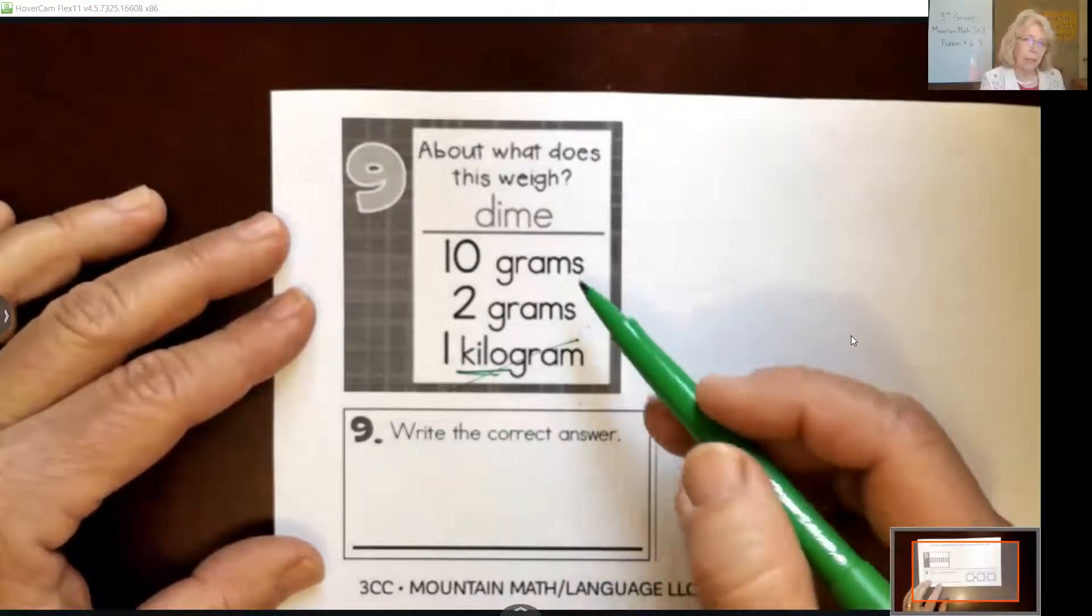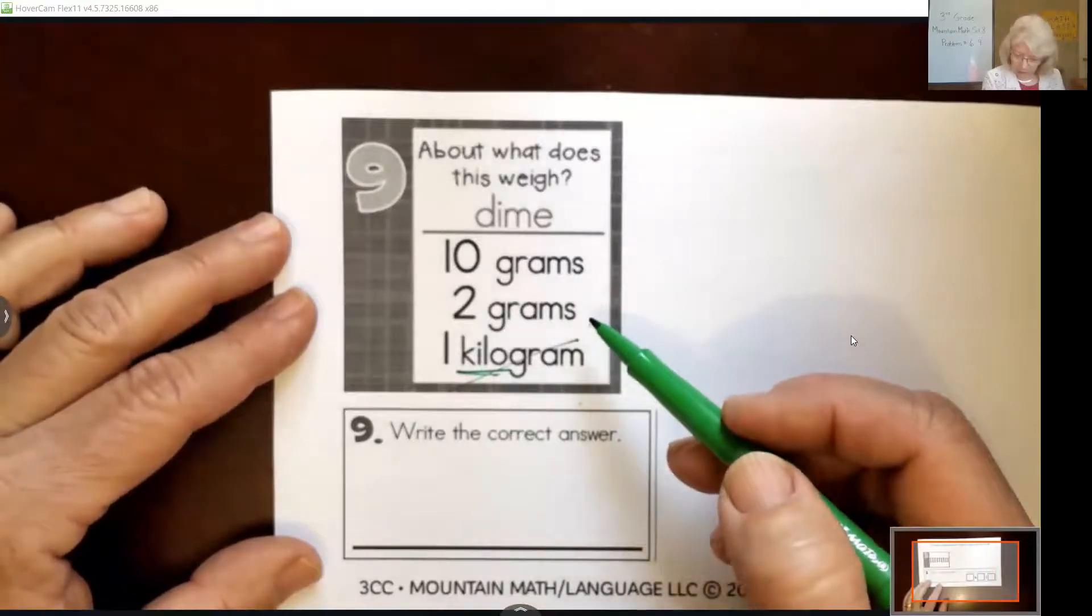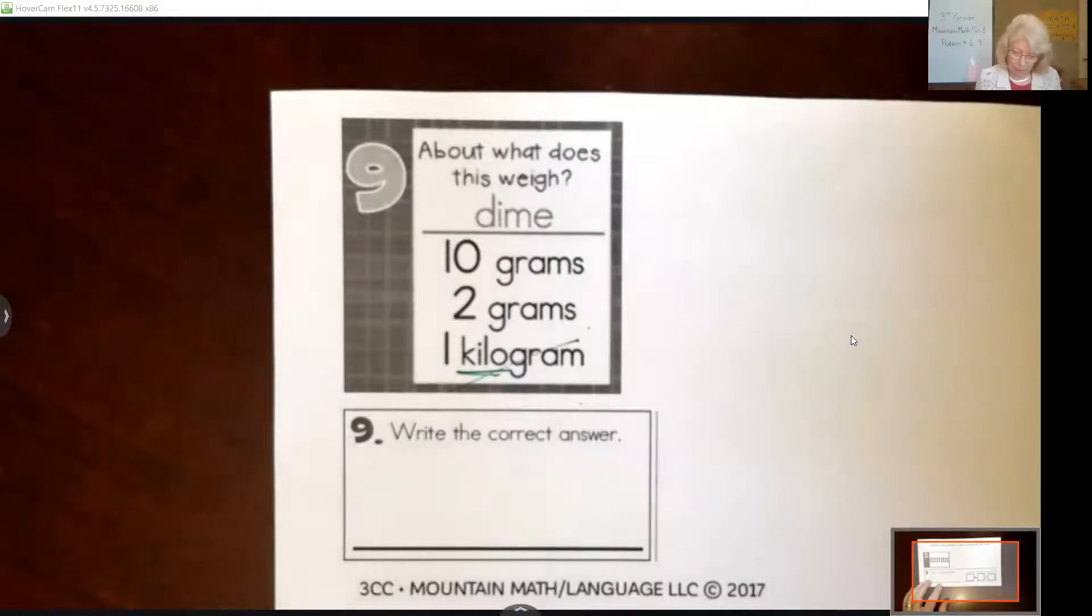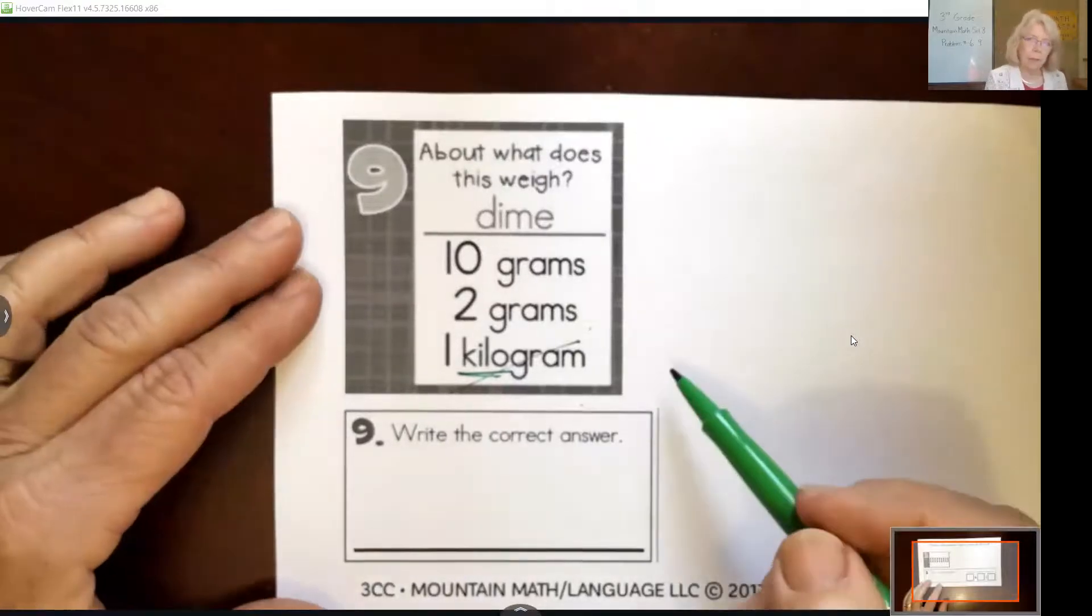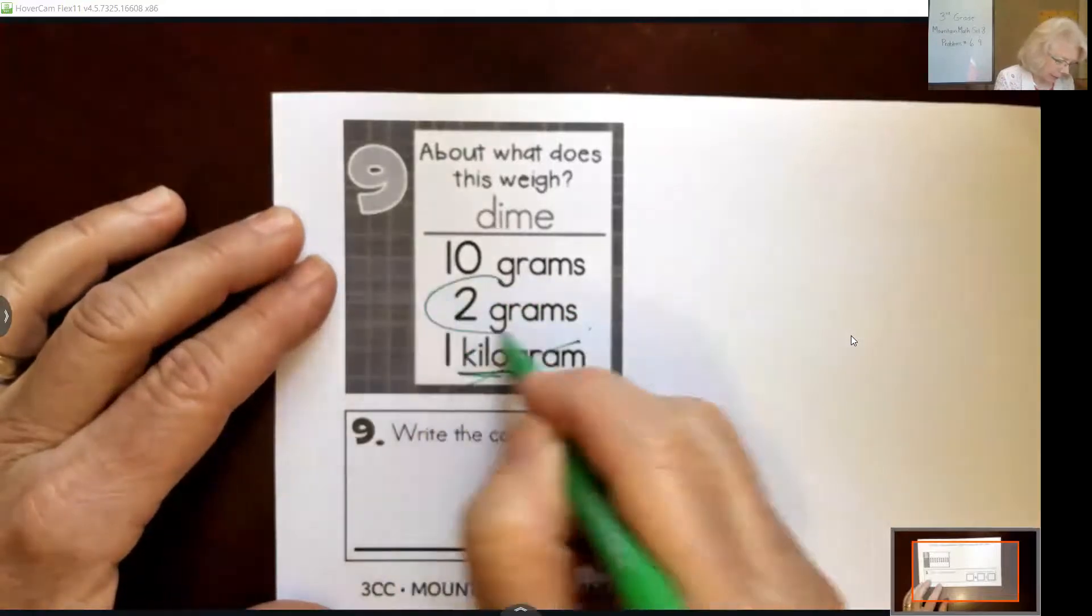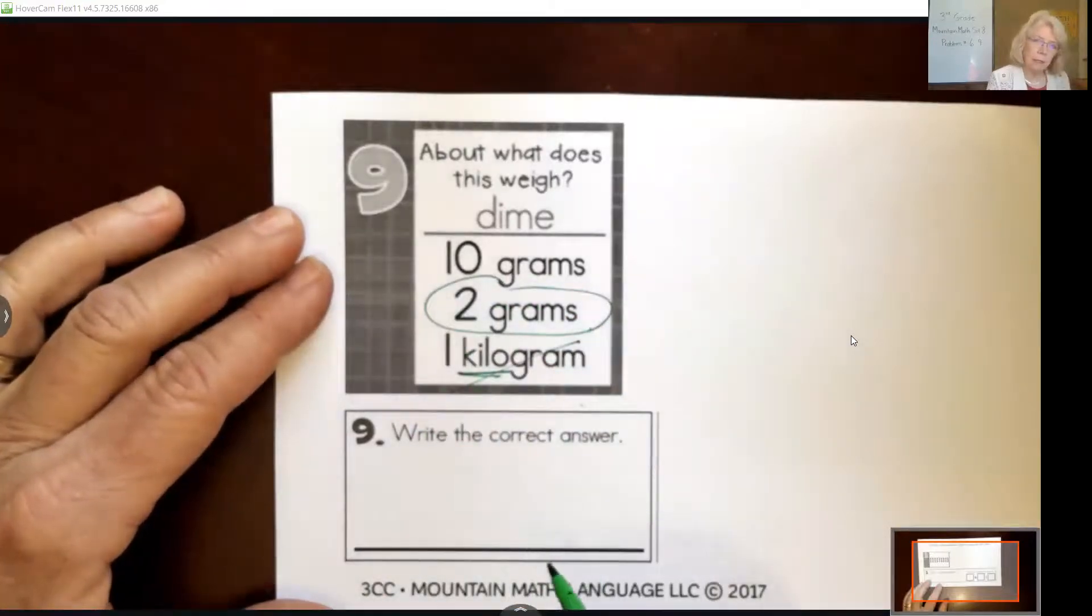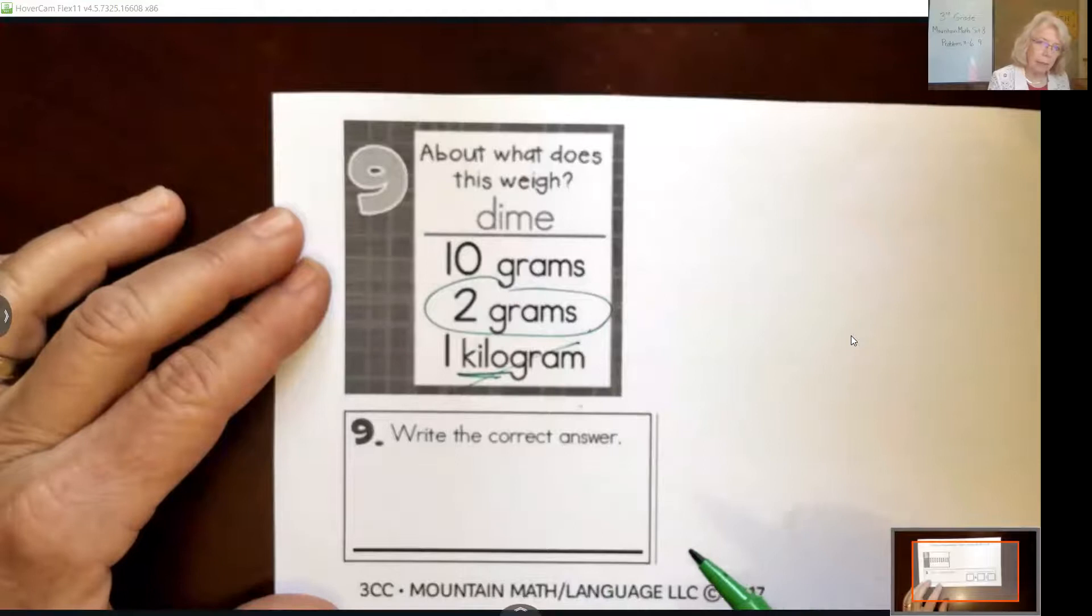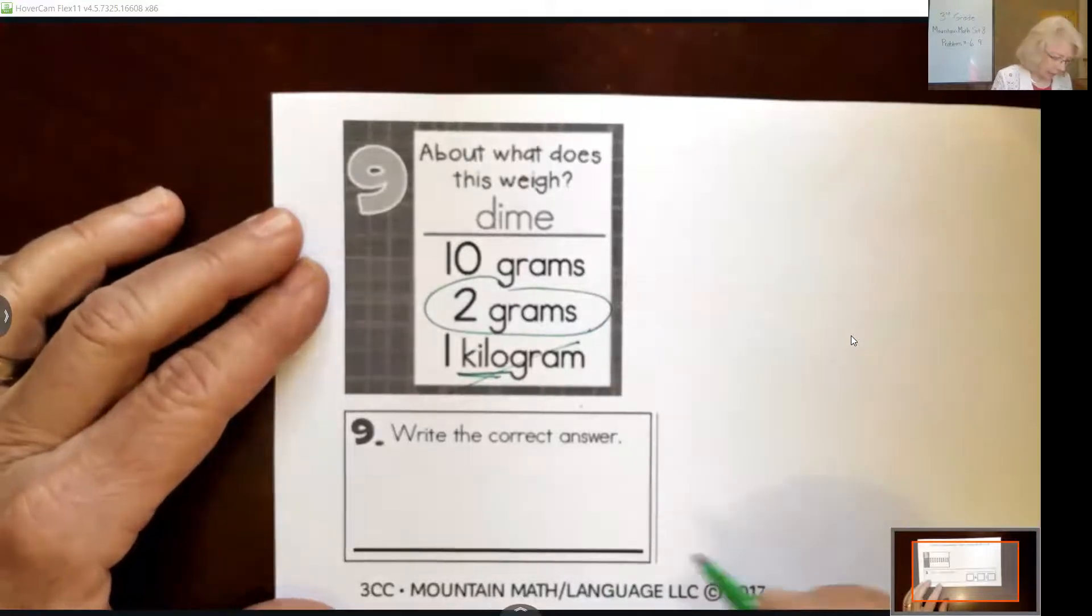So we're down to: is a dime 10 grams or 2 grams? And as you learn more about grams, you might be able to get this, but the answer is 2 grams. So that gives you a good idea—a dime weighs about, not exactly, 2 grams.